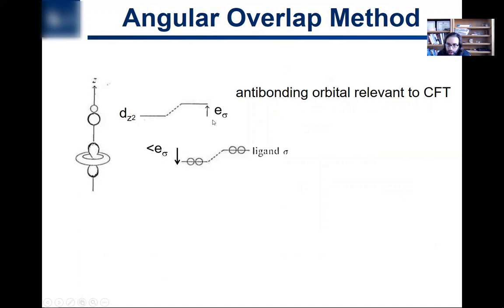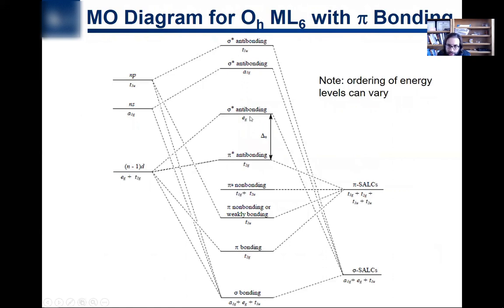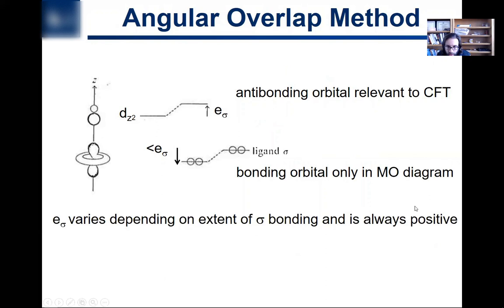Anti-bonding orbitals always go up higher than the corresponding bonding orbitals. So this is the anti-bonding orbital up here, that is relevant to crystal field theory, this will be the theory, so that is this orbital, the EG anti-bonding orbital. All right, that is the bonding orbital diagram, that's only in the MO diagram, showed it to you. E-sigma, we're going to say, is going to vary depending upon the extent of sigma bonding, it's always going to be positive.